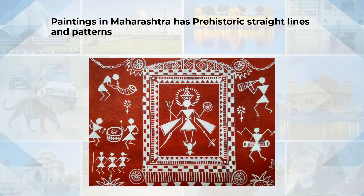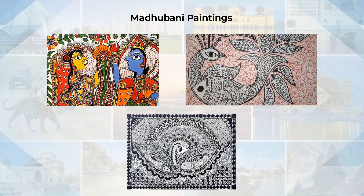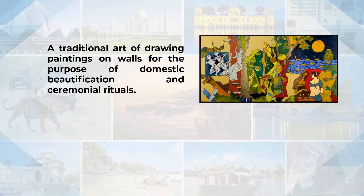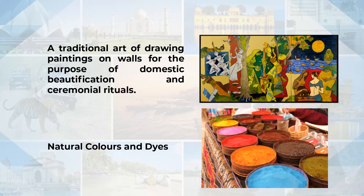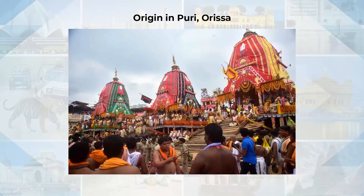Paintings in Maharashtra are popular since prehistoric times and are usually done with straight lines and patterns. Paintings in some form are popular in all parts of the country. For example, Madhubani paintings are very popular in the district of Bihar. It is a traditional art of drawing paintings on walls for domestic beautification and ceremonial rituals, using natural colors and dyes. Pata Chitra, popular in Puri in Odisha, is also a scroll painting.